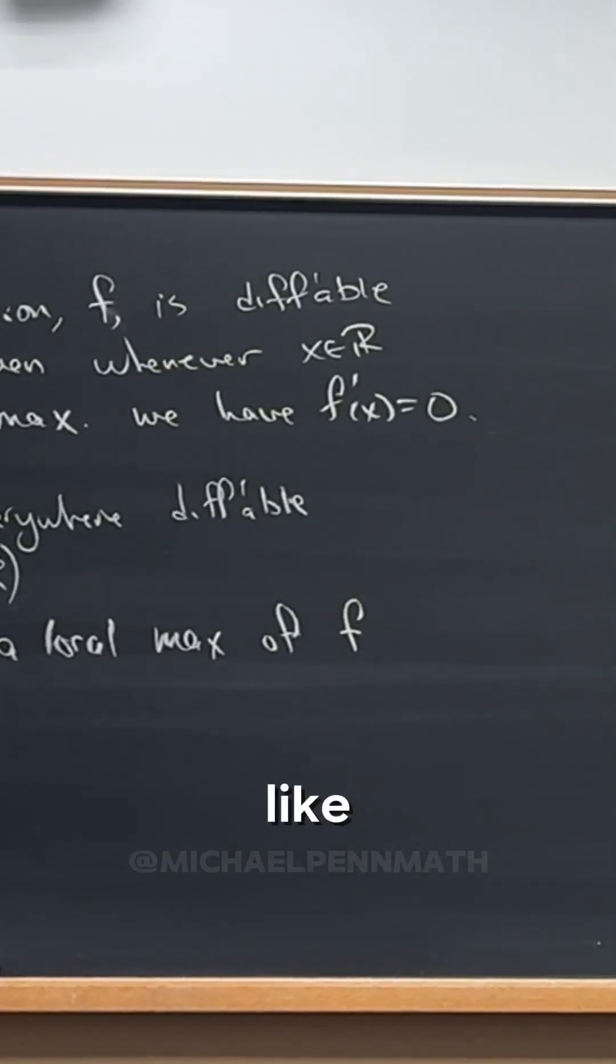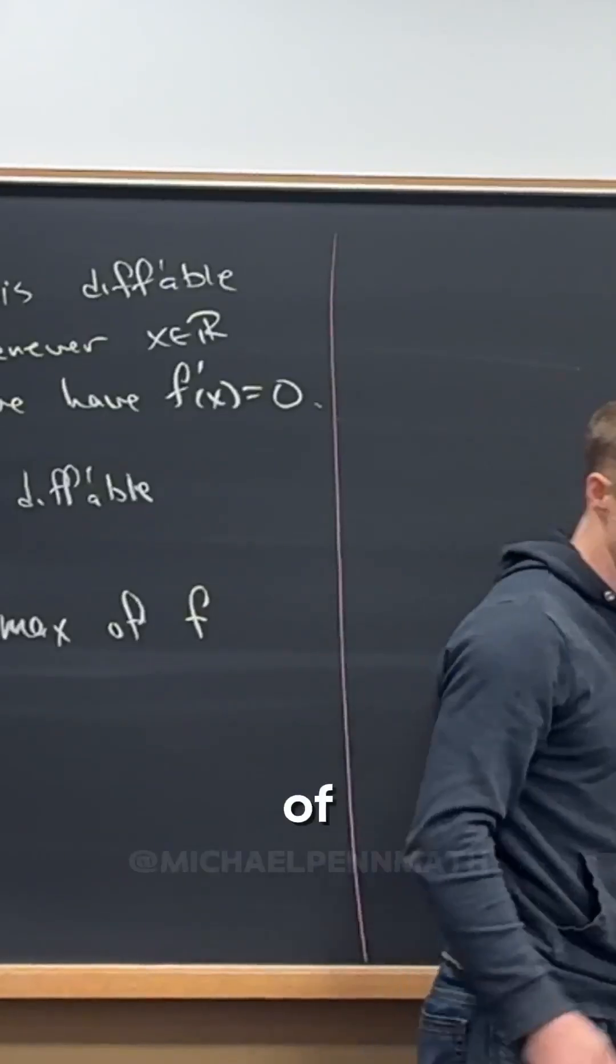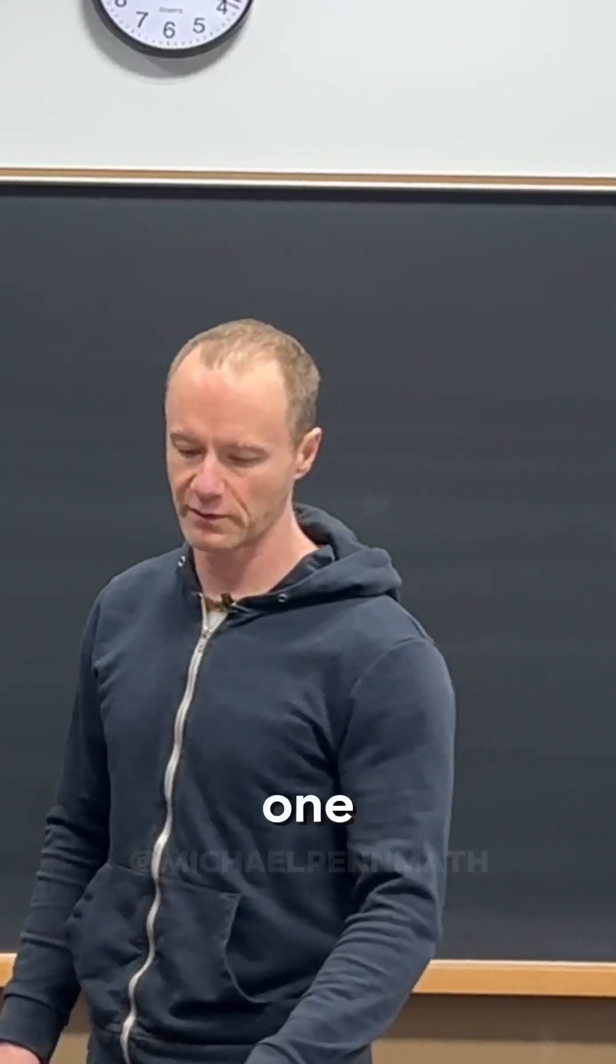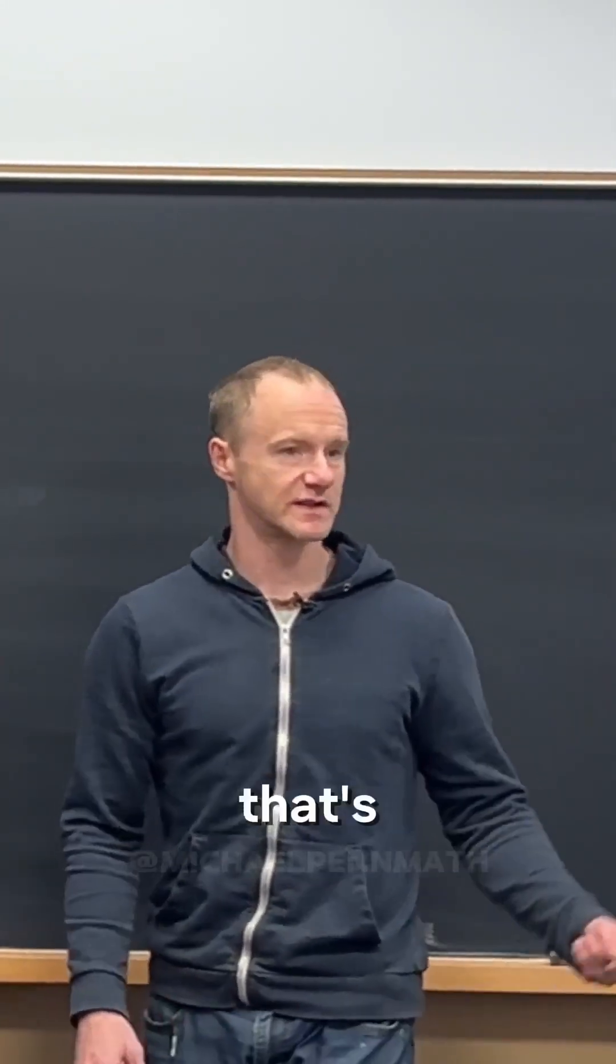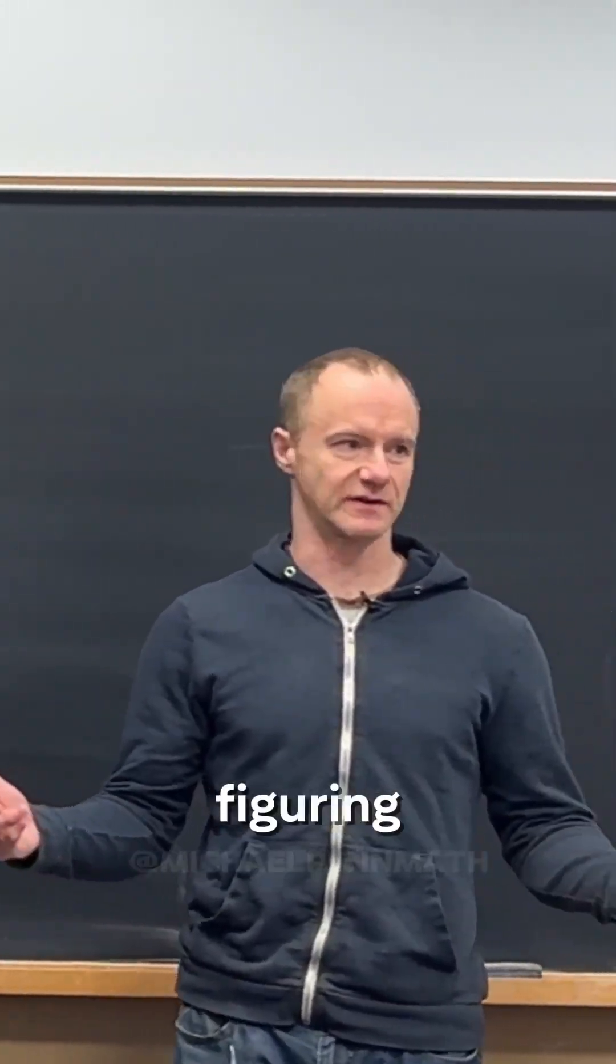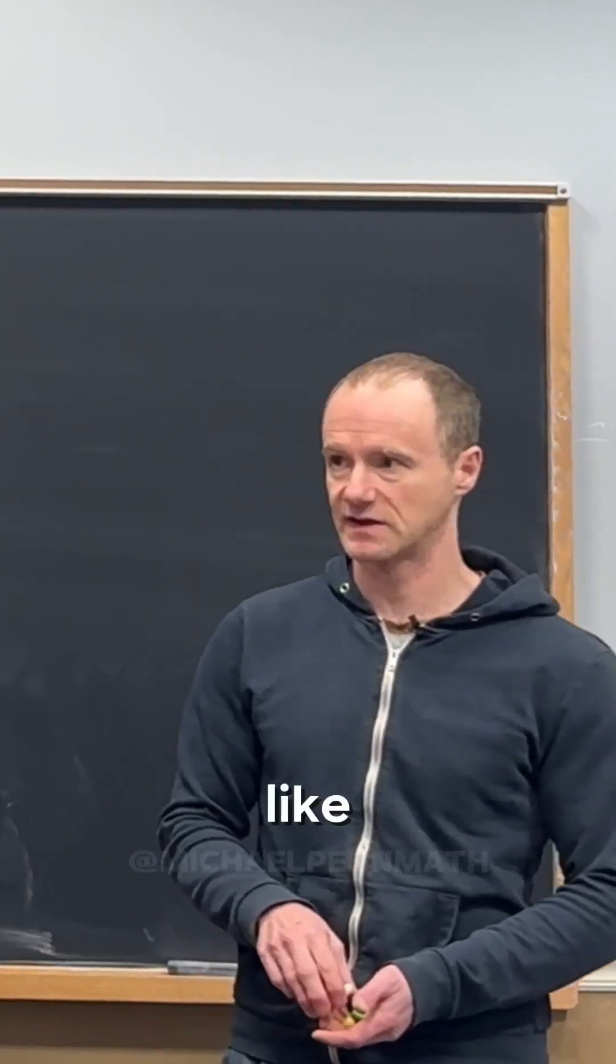Then what does this look like in symbols? There's obviously more than one way to write this down, given that different statements are logically equivalent. That's the whole point of doing truth tables - figuring out what things are logically equivalent that seem like they might not be.